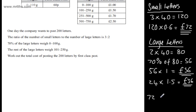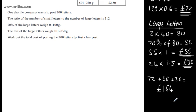So all I'm going to do is add these up. We can say 72 plus 56 plus 36 is going to be equal to the total. So all we need to do is work that out and then that will be our final answer. So if we do 72 and 56, that's going to give me 128. If I then add 36, that's going to give me 164. So that's my final answer, 164 pounds to send all of these letters by first class.